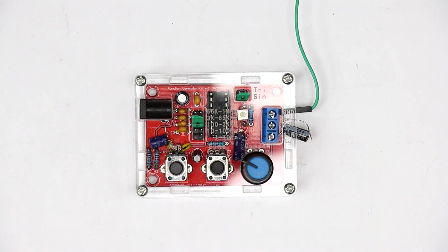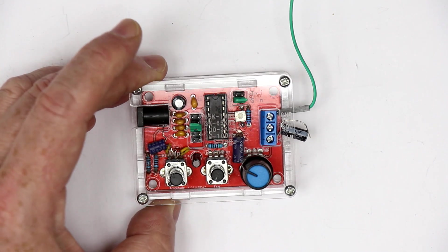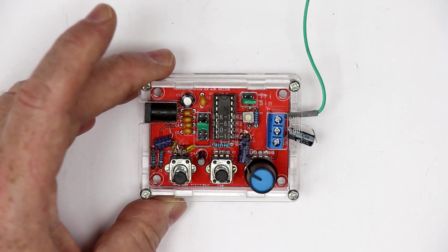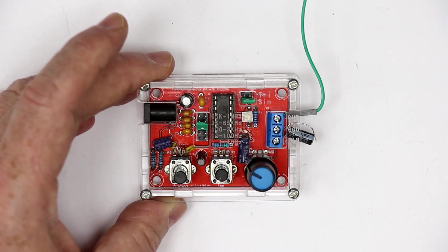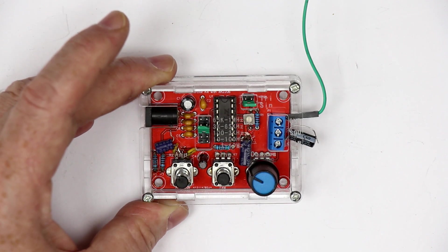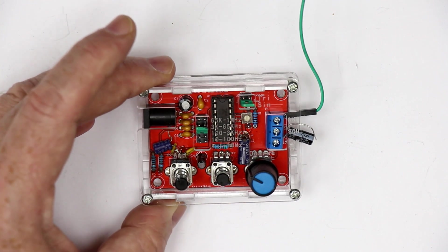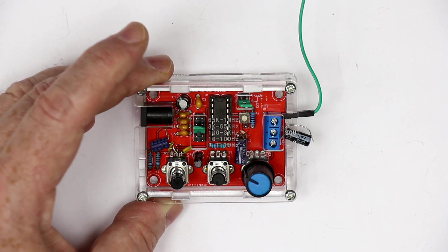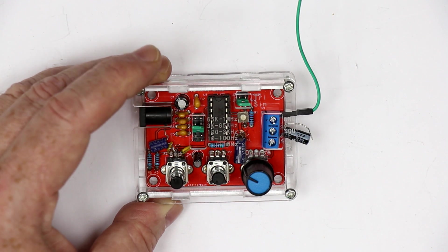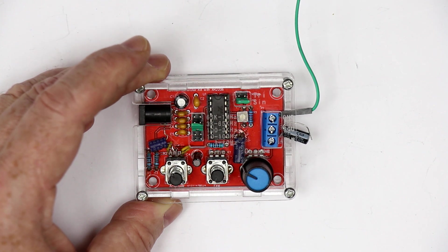The next fake chip I encountered was the famous XR2206 function generator chip which is sold in these little kits. I recognized that the chip only works up to 12 volts.